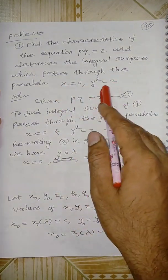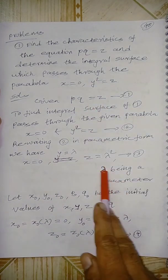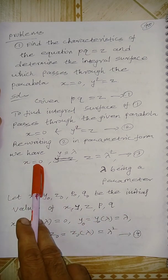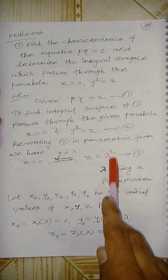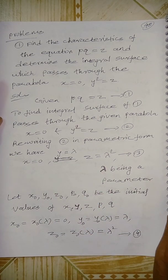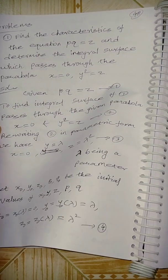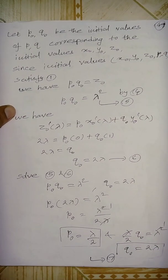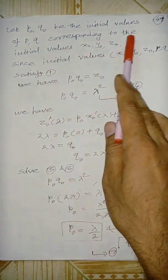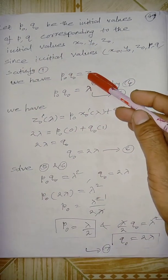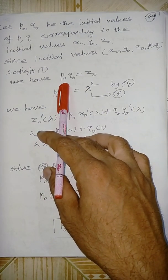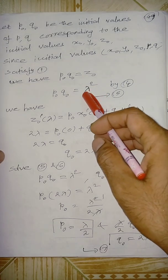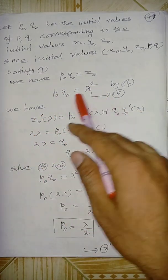So the initial values are: x0 = 0, y0 = lambda, z0 = lambda squared. Let p0, q0 be the initial values of p and q corresponding to x0, y0, z0. Given pq = z, using initial values p0·q0 = z0 = lambda squared.